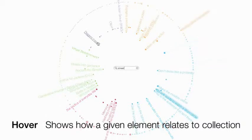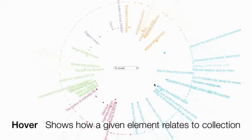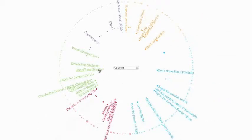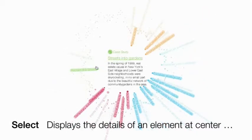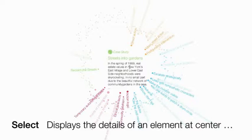Placing the mouse pointer over any element shows how it relates to the other elements in the collection. Clicking on any element turns it into the current selection and moves it into the center of the display, where more detail about this element is revealed.